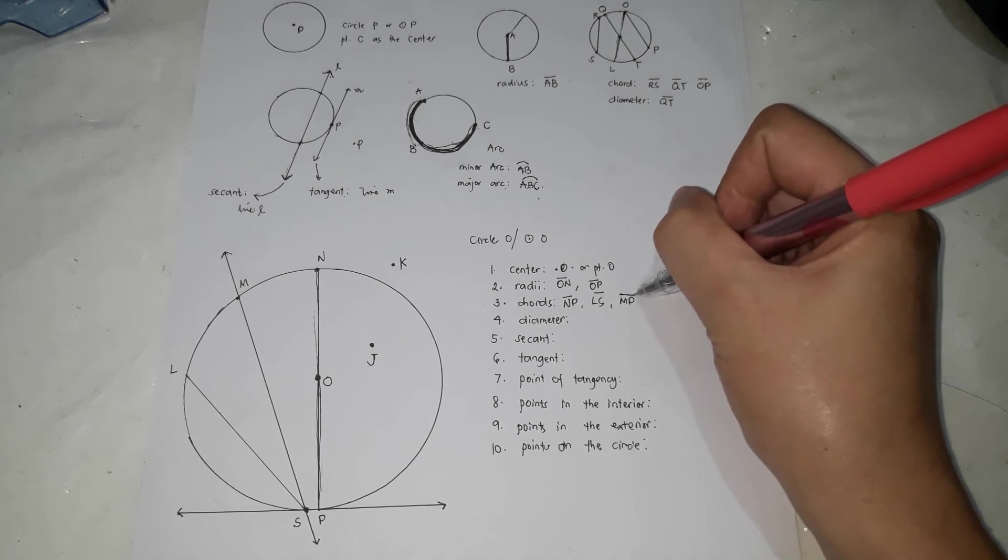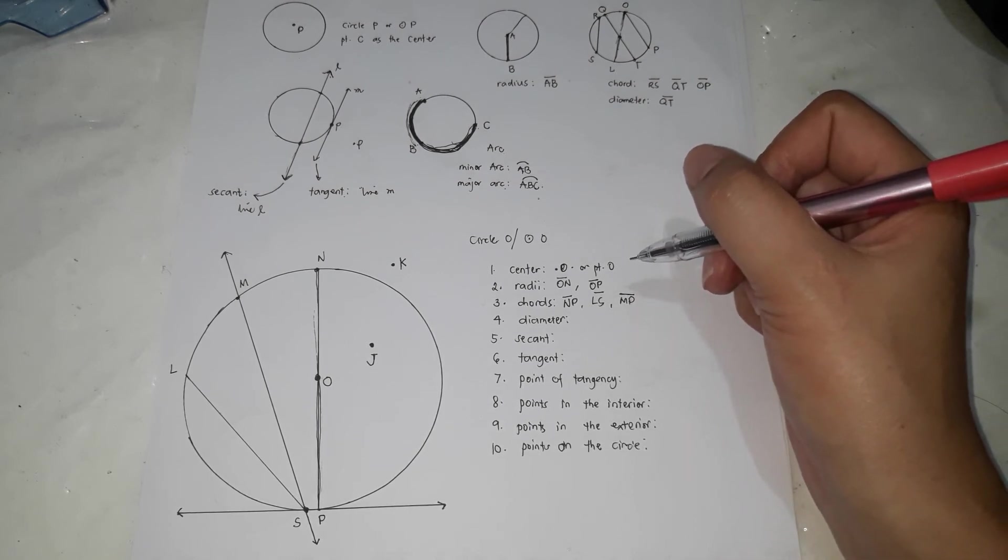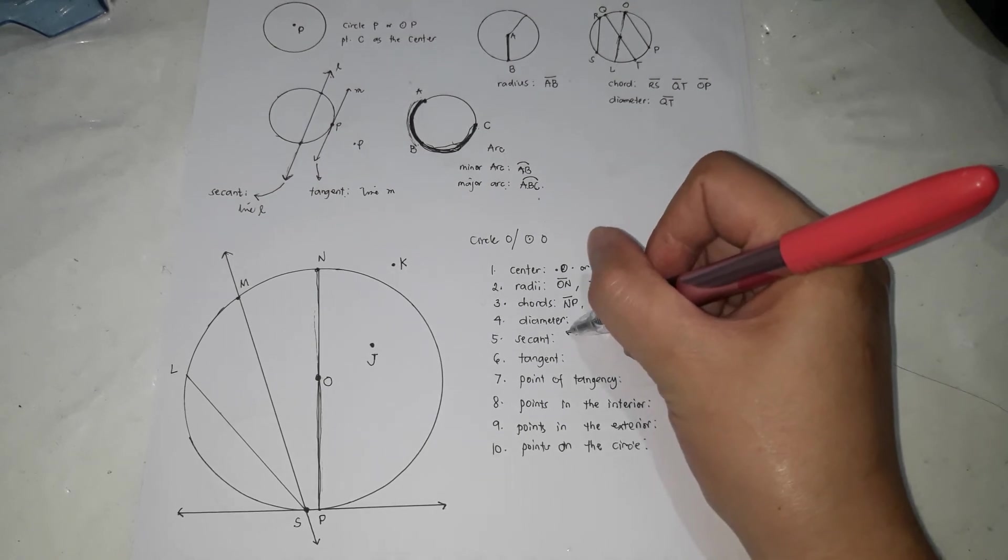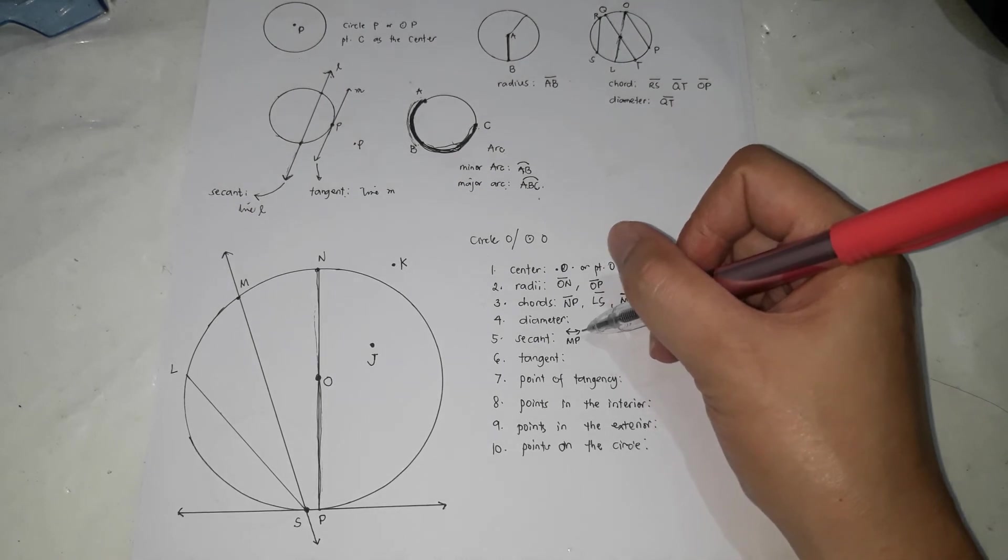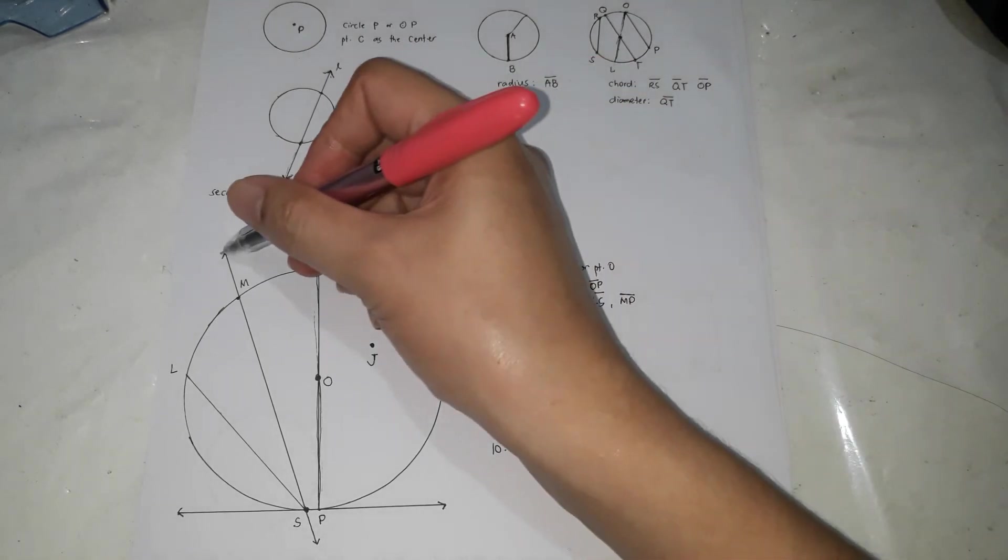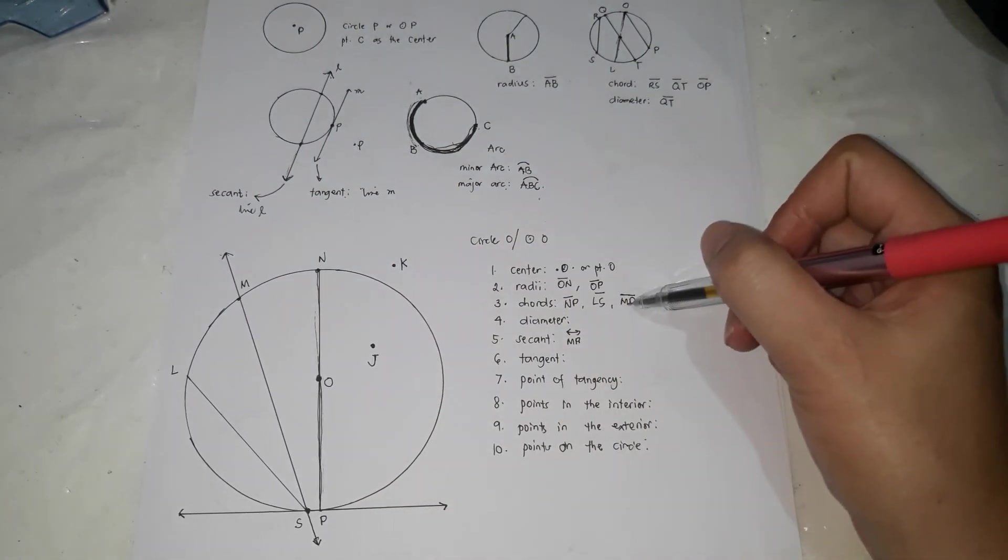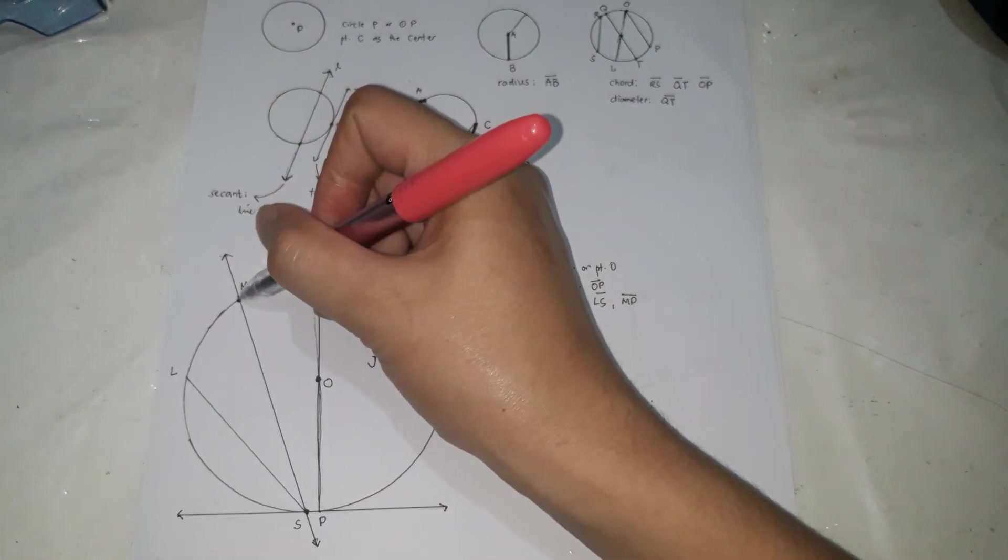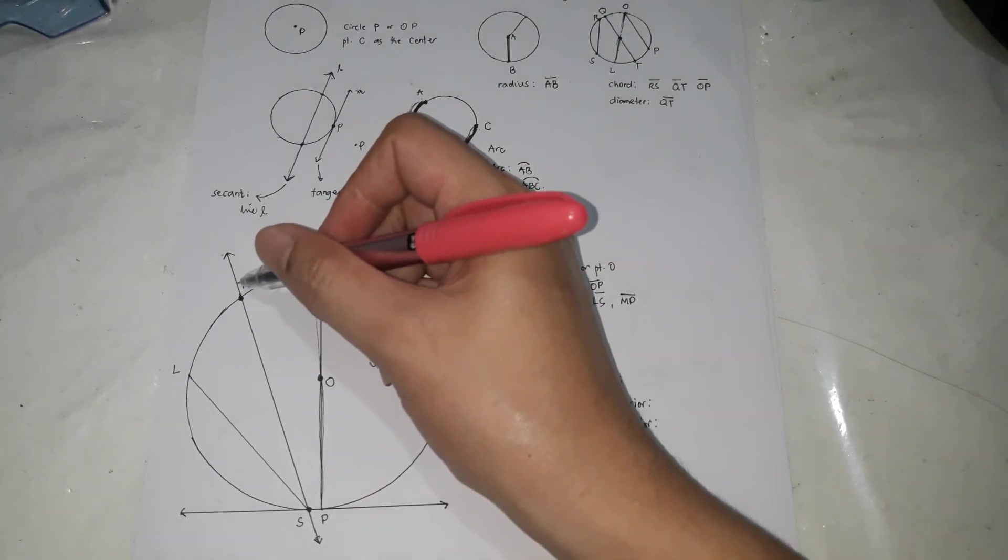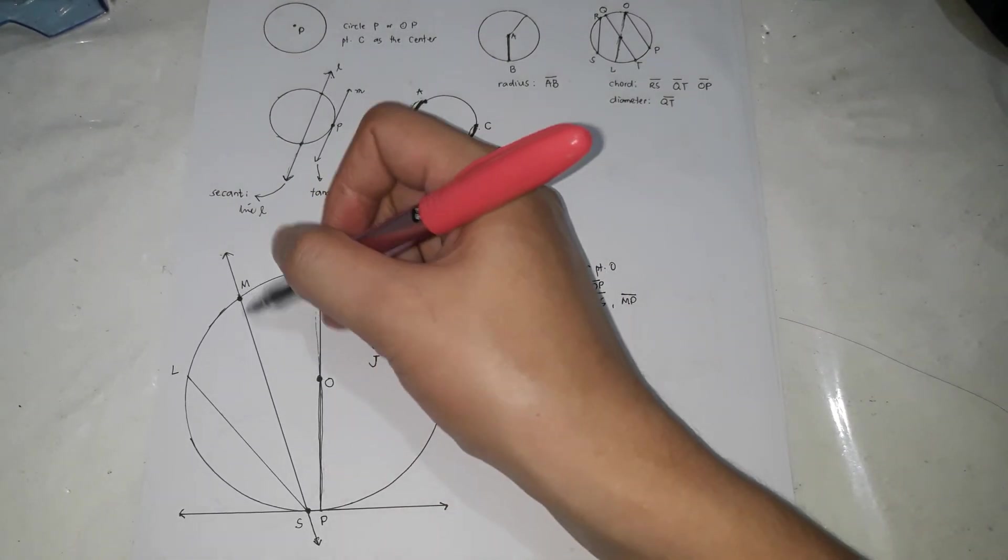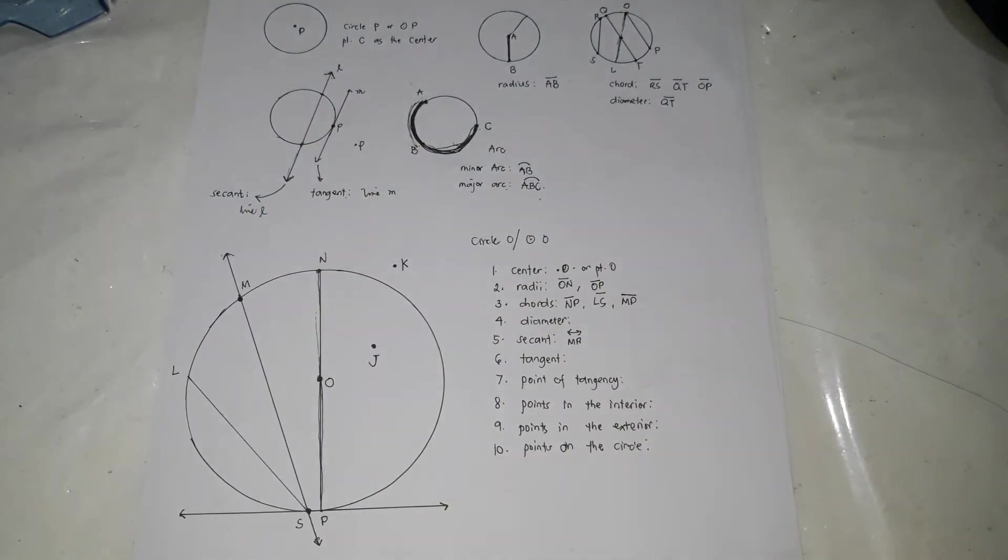But if it's a line, it's not already a chord. What's the difference between this MP and this MP? This MP refers to the line, including the arrow. But this one, MP, means from here to here only. That's line segment MP. So this doesn't include the top. So that's still a chord. But if you're going to extend it, that's already a secant.